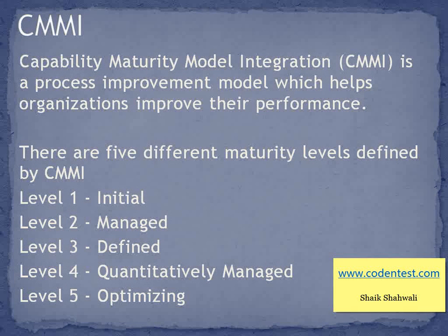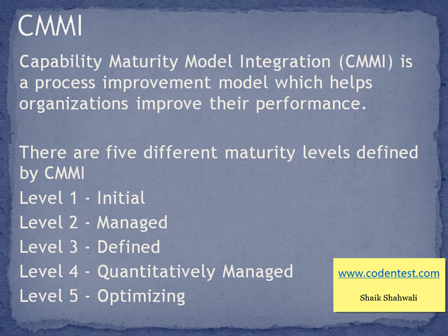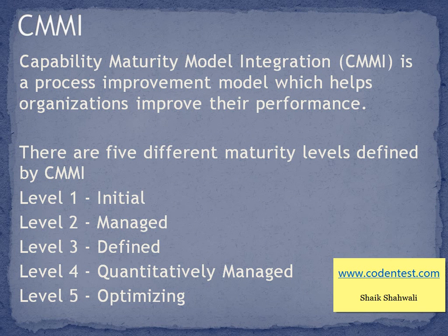Next is CMMI — Capability Maturity Model Integration. It is a process improvement model which helps organizations improve their performance. This performance can be anything: it could be in development of a software, or hiring a team of testers or developers. The CMMI can be used to guide process improvement across a project or an entire organization.